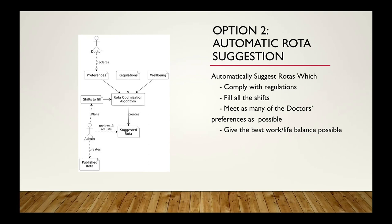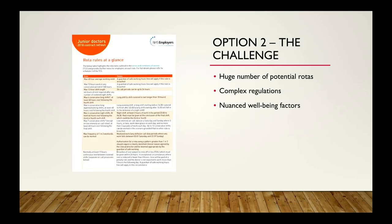The output is a suggested rota that the responsible person can review and adjust, because no algorithm is going to get it right first time on its own. This is not a small challenge. There are many millions — or a larger order of magnitude — of potential rotas to consider, defined by very complex regulations. And figuring out what constitutes a good shift is itself non-trivial — everyone here will have slightly different opinions on that.